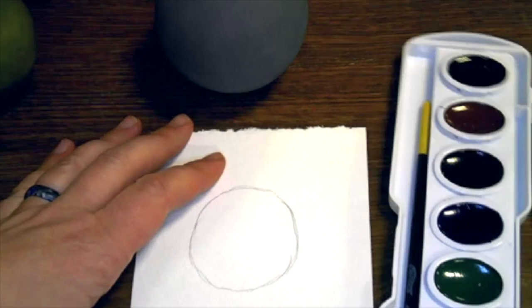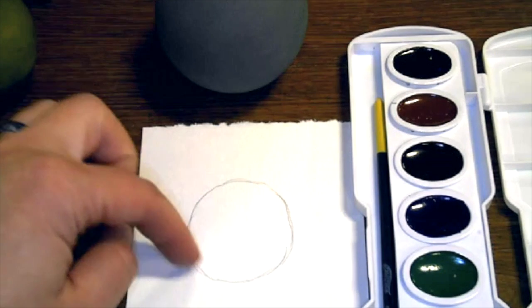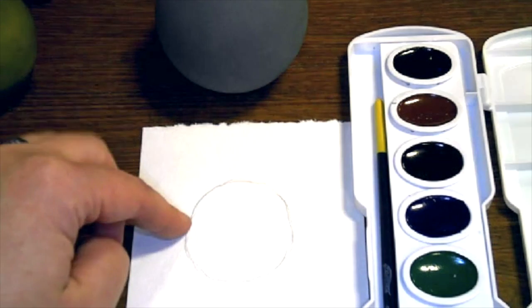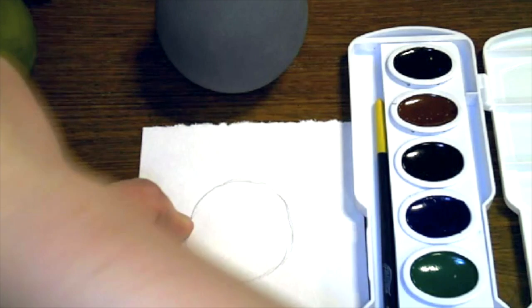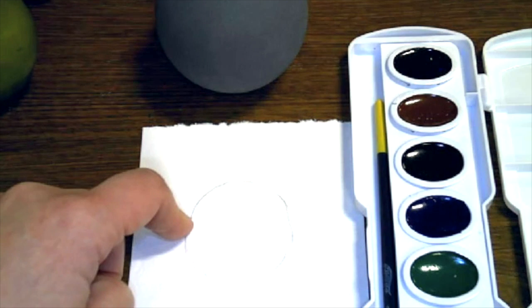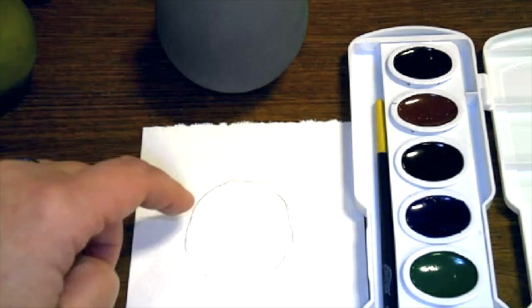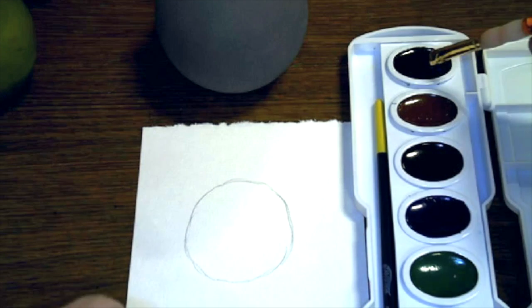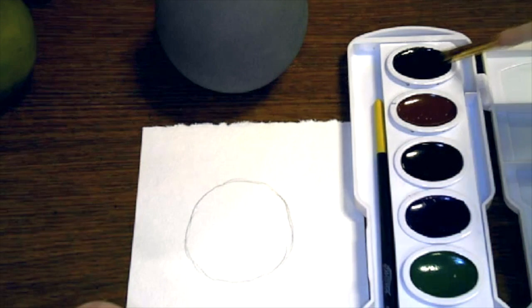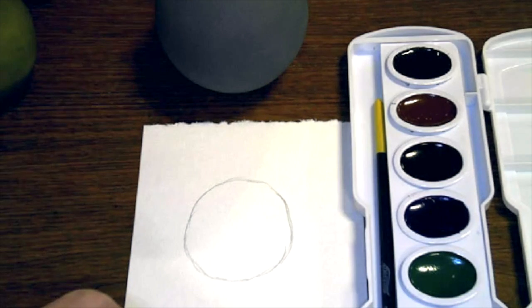So what I'm going to do is I'm going to use washes. Because this is rounded, I want to create a gradient. So I'm going to get water on my brush, and I can add some into the lid. And then I'm going to try and make this the same color, you can try and use a different color. Color doesn't matter. It's the value in the form that does.